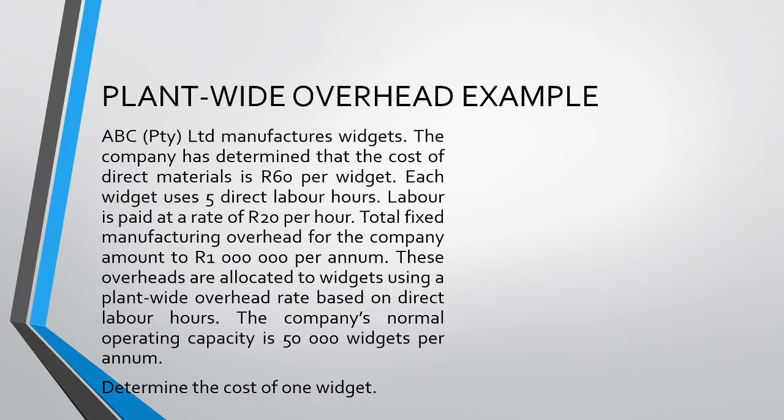Now we move into our overheads. We see that our overheads amount to 1,000,000 Rand per annum and are fixed in nature. These overheads are allocated to the widgets using a plant-wide overhead rate with direct labor hours being the cost driver. We also see that the normal operating capacity is 50,000 widgets per annum. We are required to determine the cost of one widget. Take a moment now to see if you can calculate the total product cost on your own.